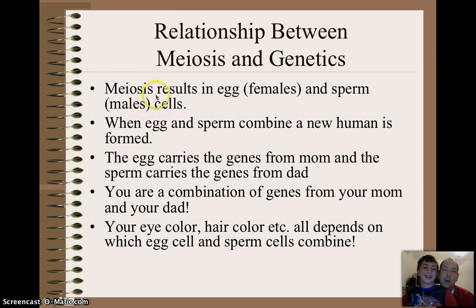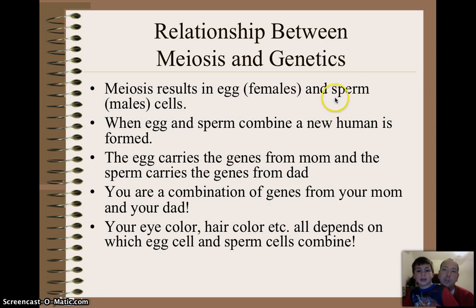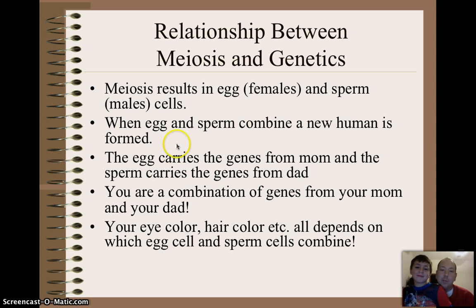And so what happens is, when sperm bashes into the egg, we get a brand new human. Basically, what that means is that dad, with his sperm, will provide 23 chromosomes, and mom, with their eggs, 23 chromosomes, and that's what makes you. So you're half mom, half dad.